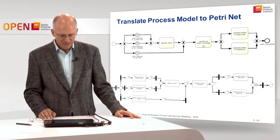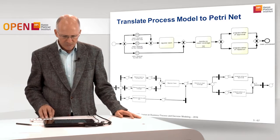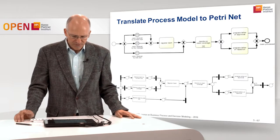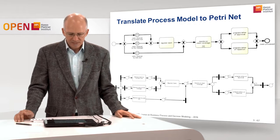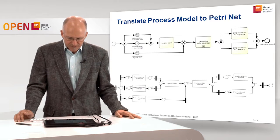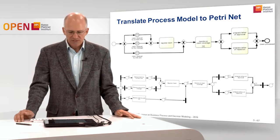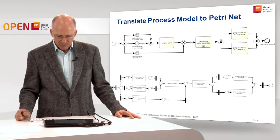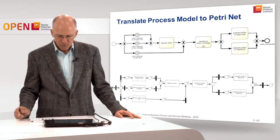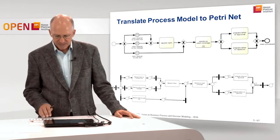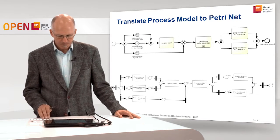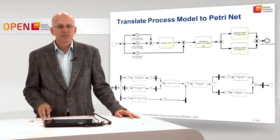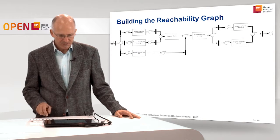We did this for the register claim process where we can receive a claim by surface mail, fax, or website. In some cases we need to register the claim. In all cases we decide on the claim coverage and either prepare a letter of approval or prepare a letter of rejection, and the process then terminates. We discussed previously how the respective Petri Net looks.